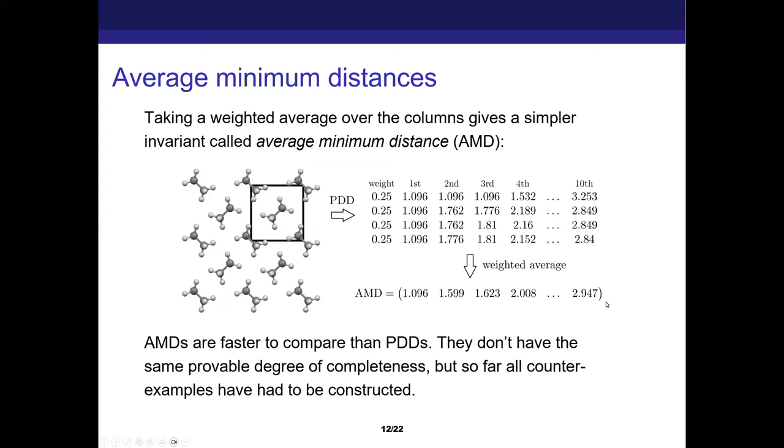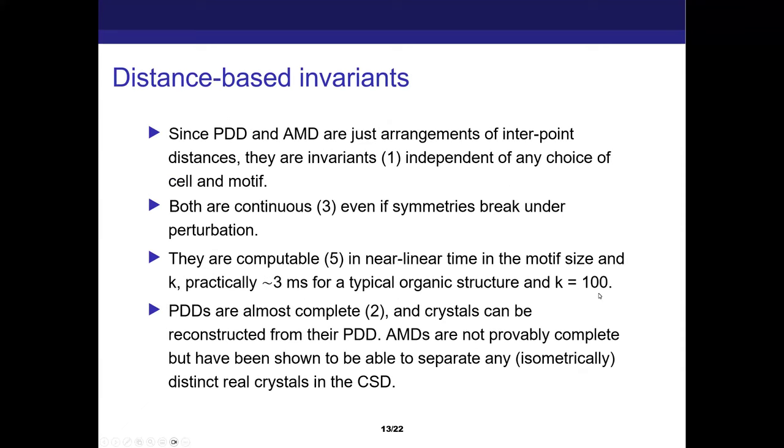Even though they do lose information, they don't to the same extent as something like density. All the counter examples have had to be constructed where AMD gets confused between two different things, which can happen, but those instances have had to be constructed so far. It doesn't really happen for real crystals as far as we know. So this AMD - even if the construction there didn't make sense - you should think this AMD is the output of our function. It's the invariant we were looking for.